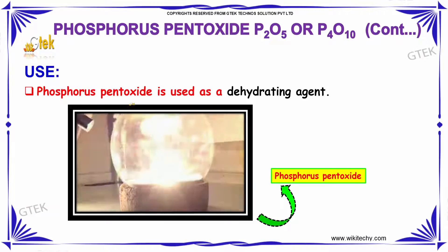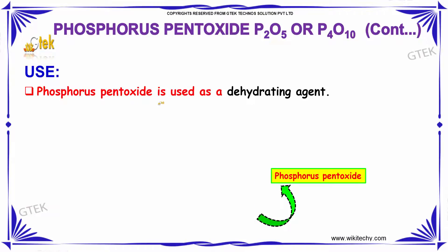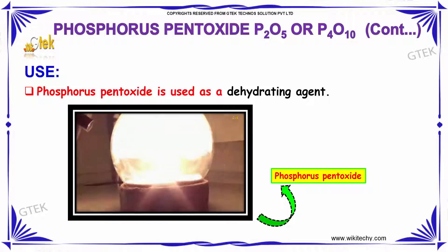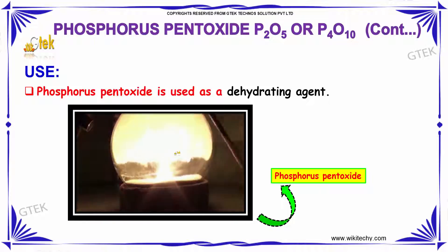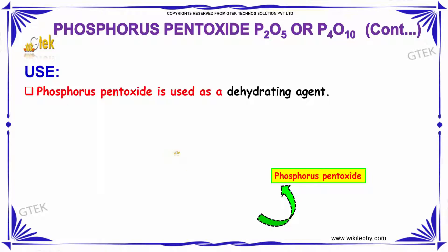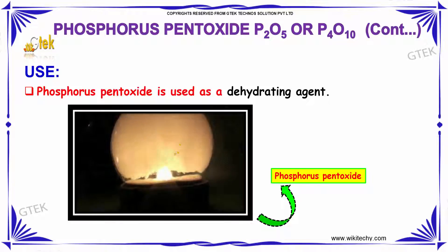If we talk about the uses of Phosphorus pentoxide, it is used as a dehydrating agent.